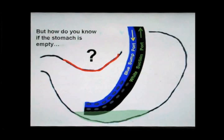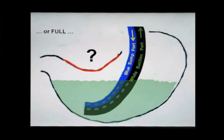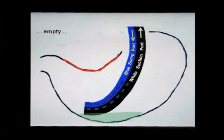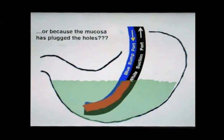How do you know if the stomach is empty or full if you can't see the mucosa? In other words, if fluid stops coming out of the NG tube, is it because the stomach is empty, as we would like, or because the mucosa has plugged the holes?